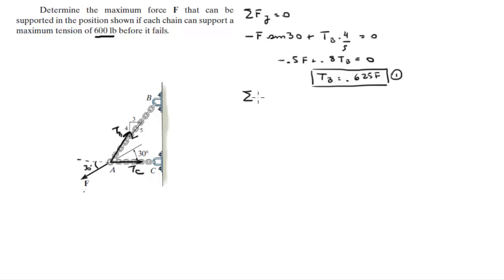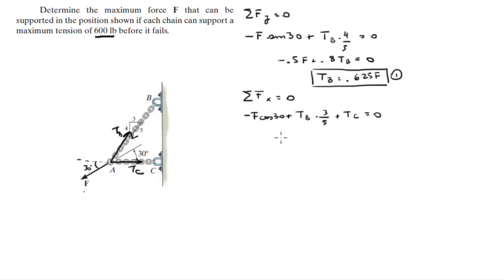Second equation: the sum of forces in the x-direction is equal to zero. So negative F cosine of 30 — the x-component of this force — plus Tb times 3 over 5 plus Tc equals zero. That gives us negative 0.866F plus 0.6 Tb plus Tc equals zero. I'm going to plug in the value for Tb from equation one.